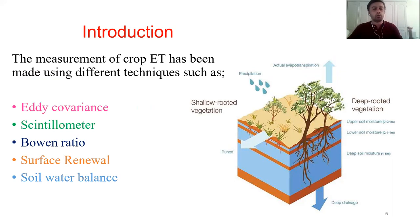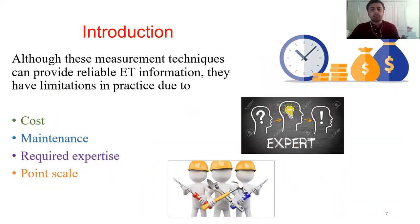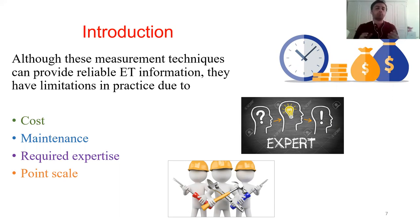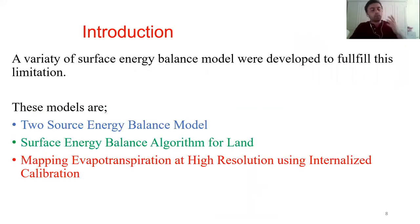The question is: how can we measure evapotranspiration? There are several techniques, such as eddy covariance, lysimeter, Bowen ratio, surface renewal, and the soil water balance approach used in this study. Although these techniques can measure ET precisely, they have limitations: their cost is high and unaffordable for farmers, they require regular maintenance and expert interpretation. But the main restriction is that they are point-scale — you can only get ET information at the measurement point, not across the entire field. To fill this gap, researchers have started using remote sensing techniques.